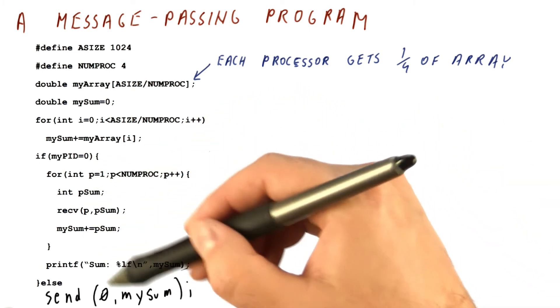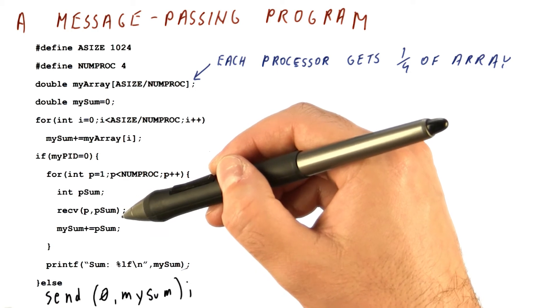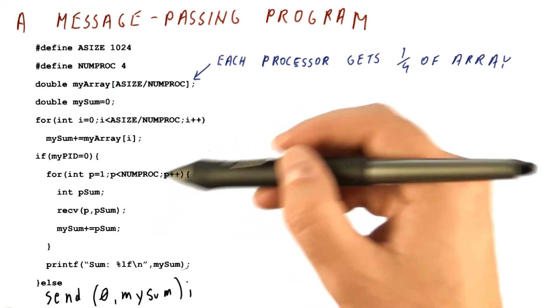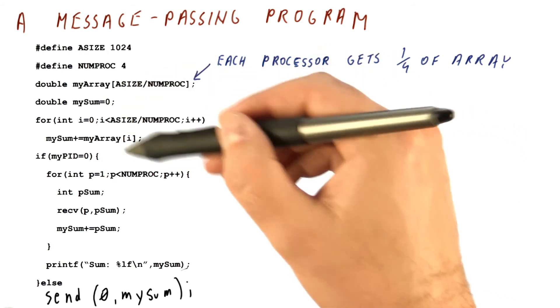So as you can see, we need to explicitly send and then receive things in order for communication between processors to happen. And also we have to explicitly control what gets into whose part of memory.